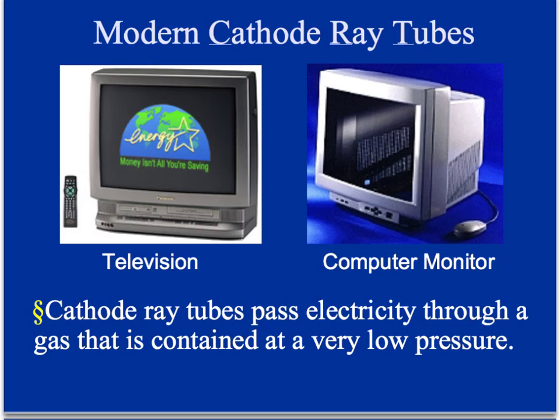While the cathode ray tube may look archaic, you've probably seen one. A cathode ray tube is also known as a CRT — CRT televisions and older computer monitors actually have a gas tube inside them. A cathode ray tube passes electricity through gas contained at a very low pressure. That's why if you were to drop one of these old televisions or monitors, they wouldn't work anymore, because the gas can no longer be contained in the tube.